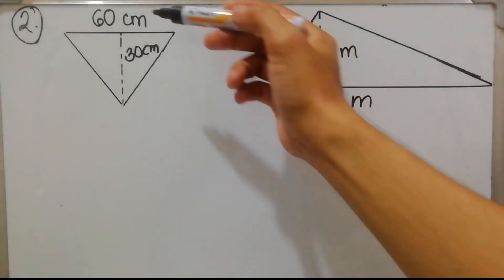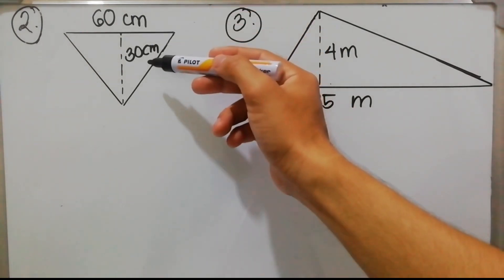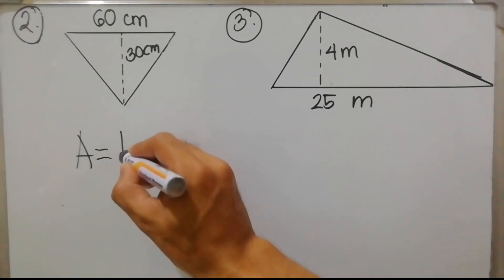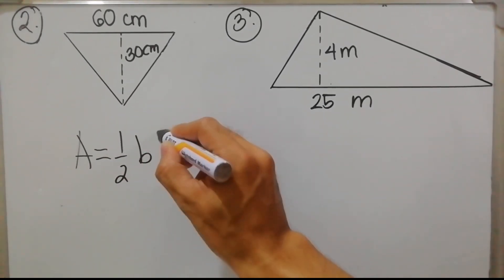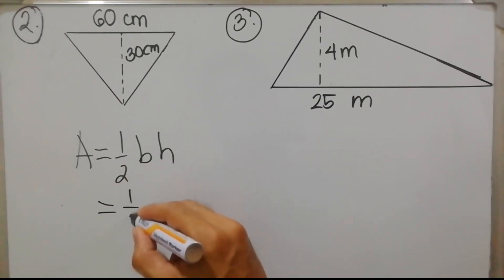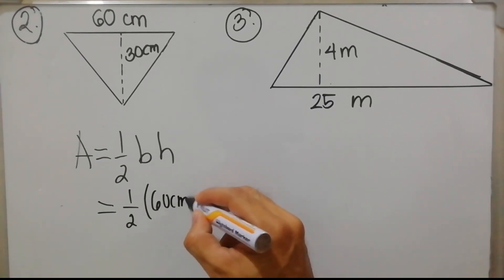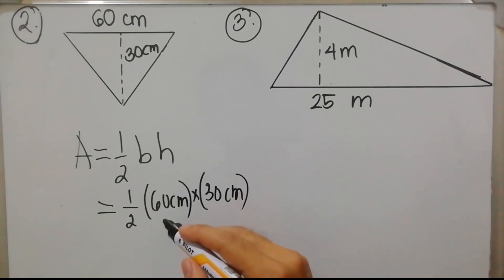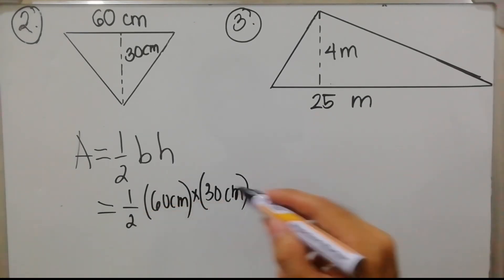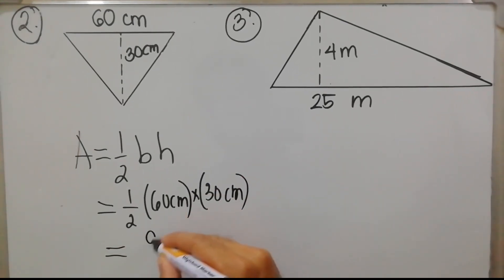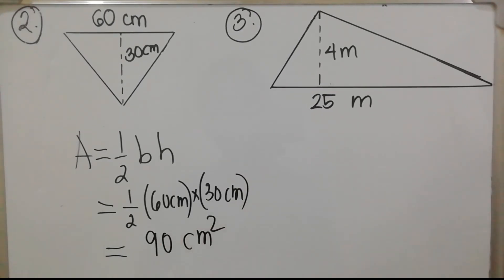For example number two, we have a base of 60 centimeters and a height of 30 centimeters. The formula is area = one half × base × height. We can divide first: 60 ÷ 2 = 30, then 30 × 30 = 900. So the area is 900 square centimeters.